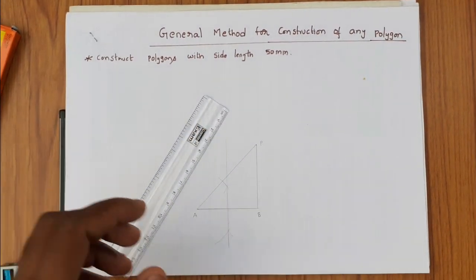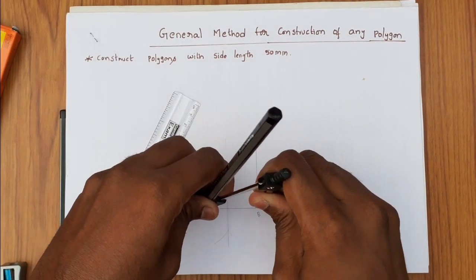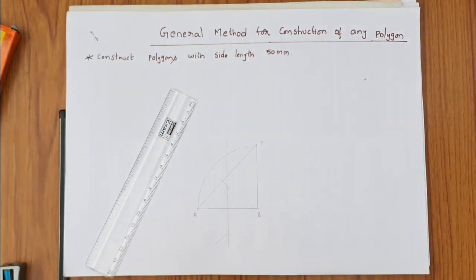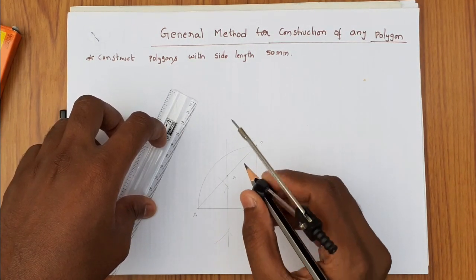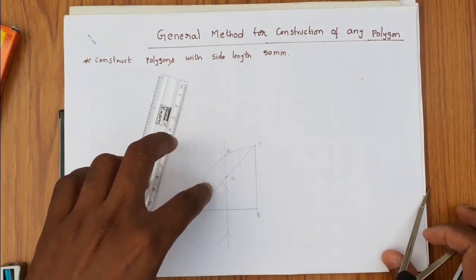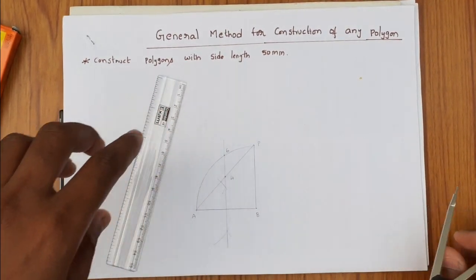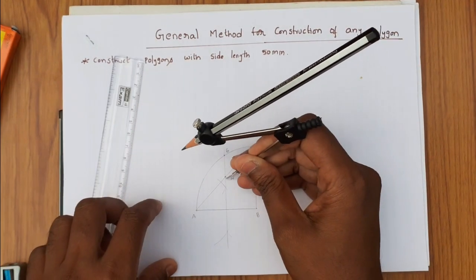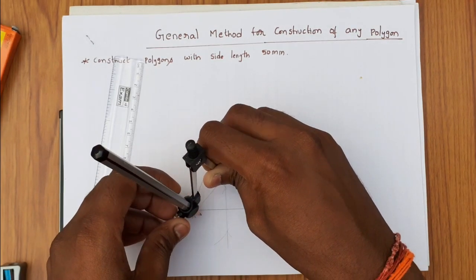With B as center and AB as radius, draw an arc. Name the intersection point on the inclined line as 9, and the intersection point between the arc and the bisection line as 6. The point on the inclined line is 4 and on the bisection line is 6.